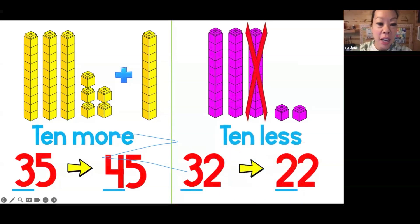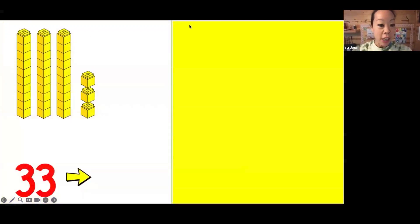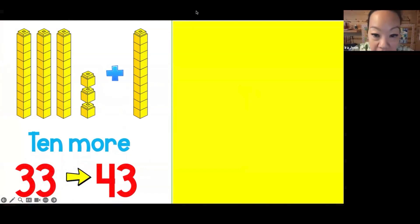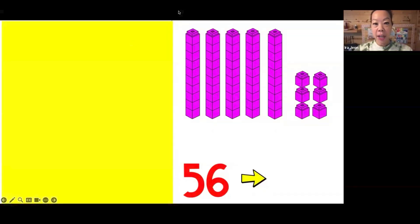Now I have 33 blocks. If I add 10 more, anybody know what my new value is? How many do I have now? 43. Good, we have 43, and that would be 10 more. The 3 in the 10 spot changed to 4. Again, my 1 spot has stayed the same.